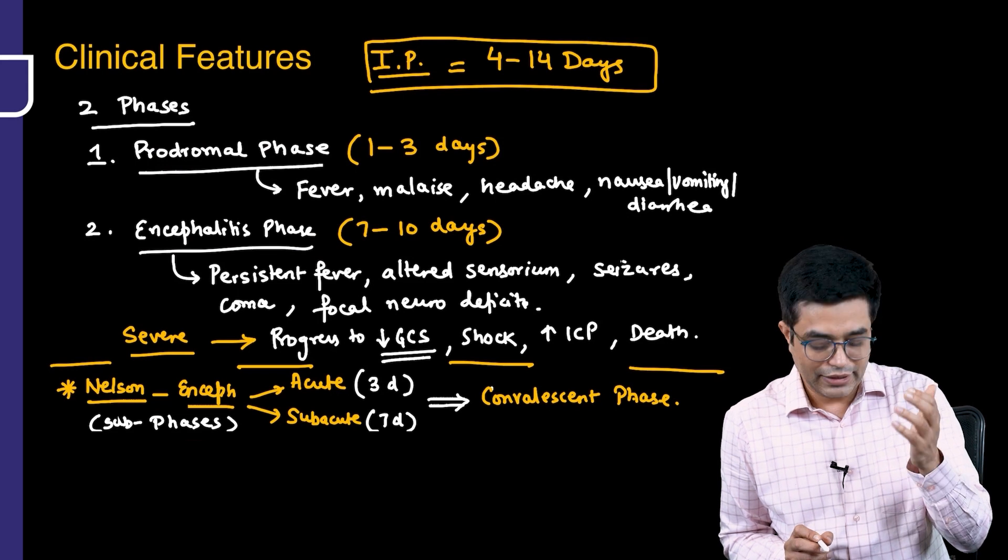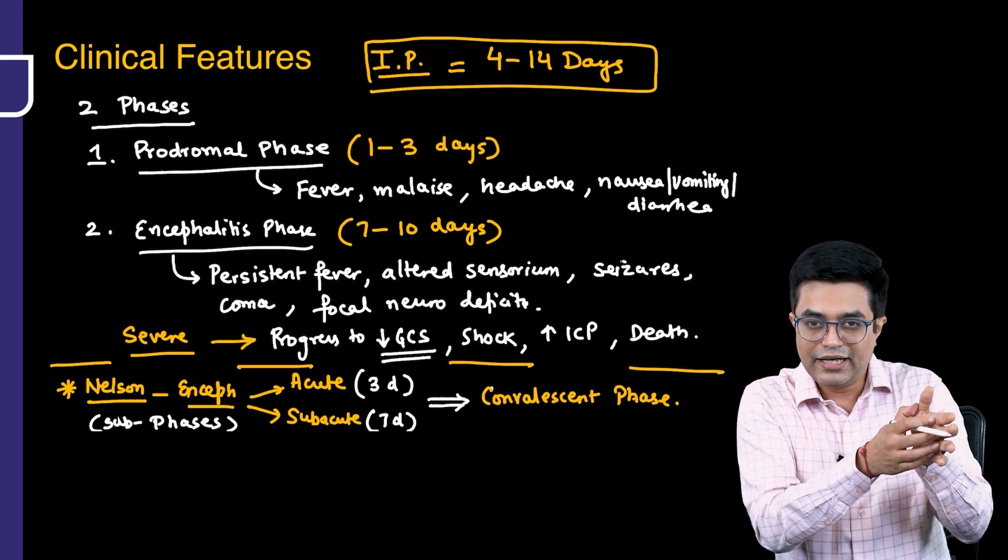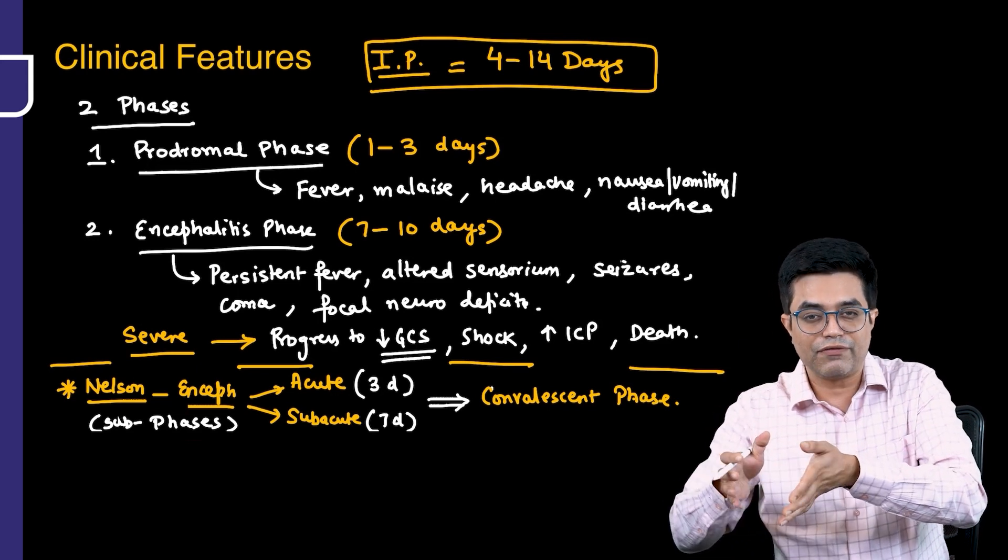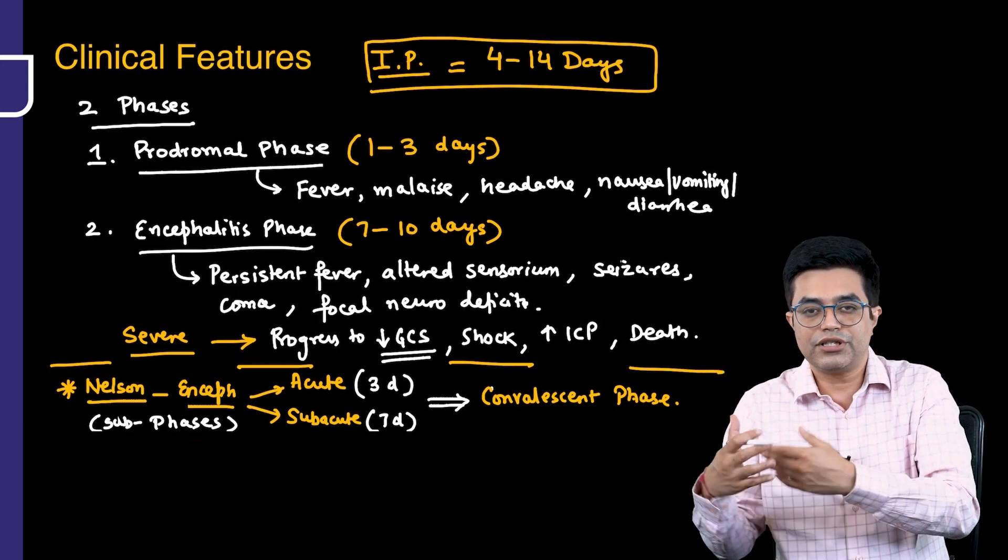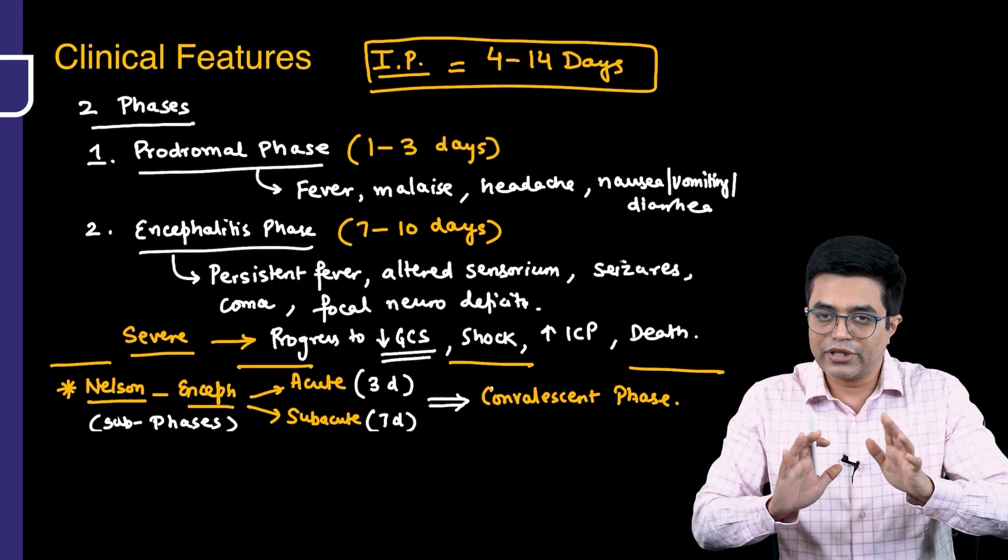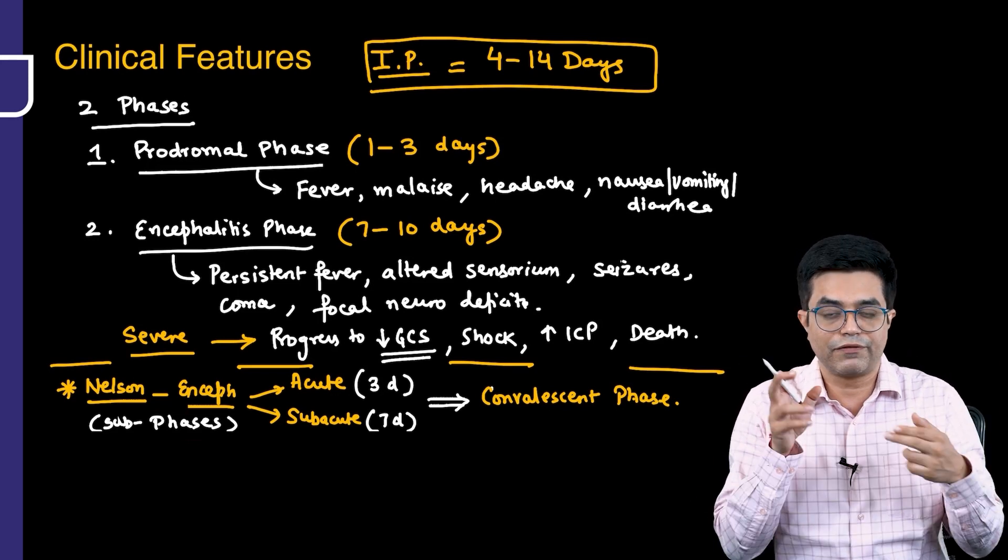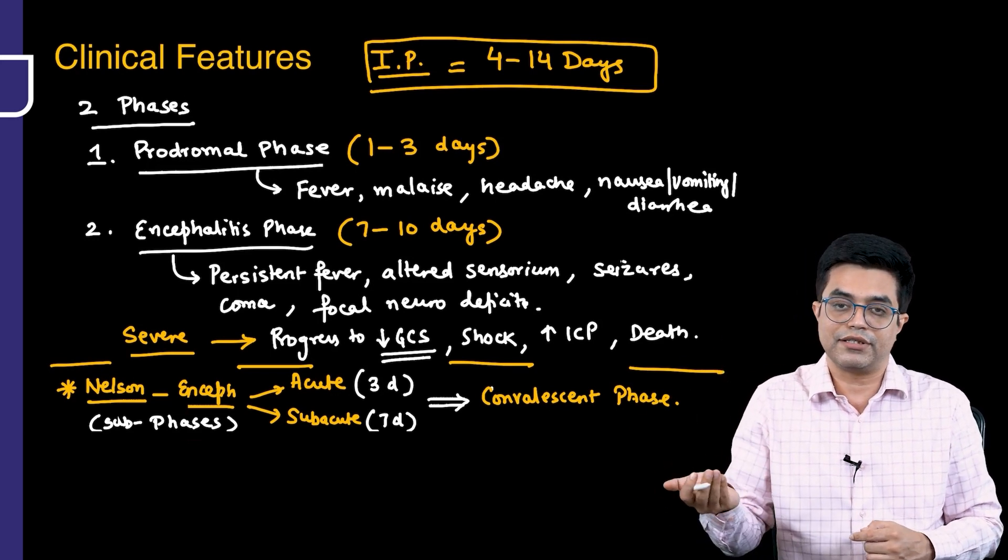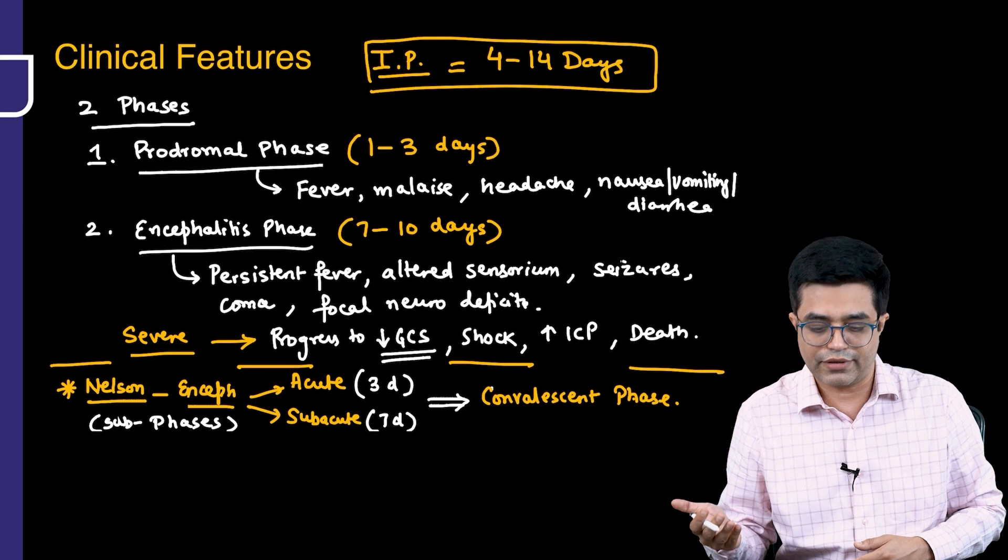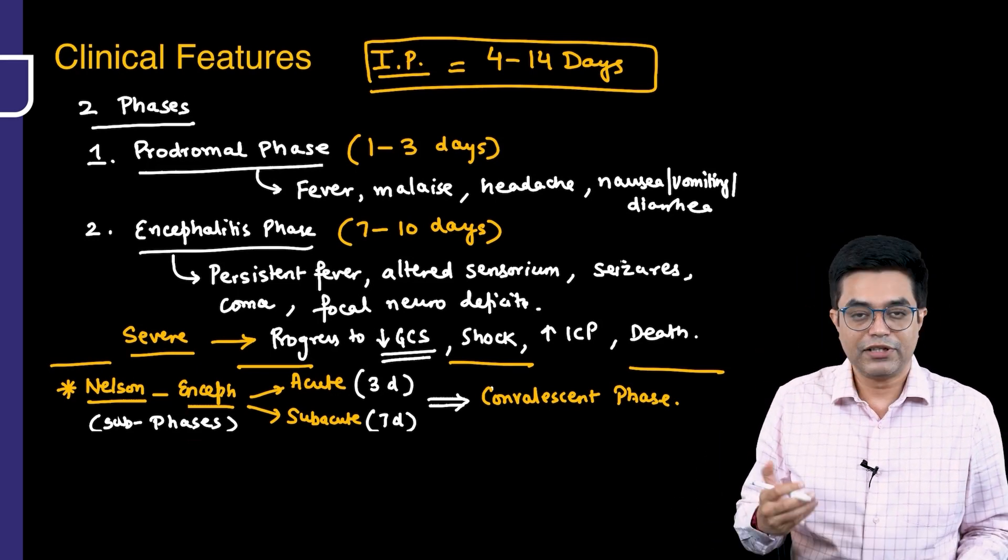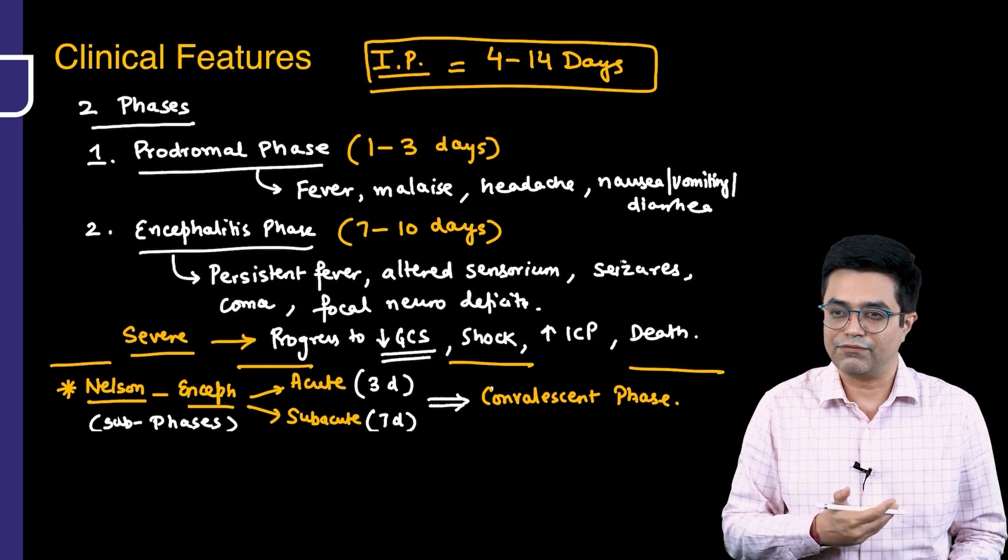Nelson describes prodromal phase, then acute encephalitic phase, then subacute encephalitic phase, and then convalescence. Features and progression will vary from child to child, but majorly they remain the same. Don't get confused if you're reading from different sources - this is just a different way of expression. These are the clinical features you need to know. Some will survive, some will develop sequelae, and some will die.